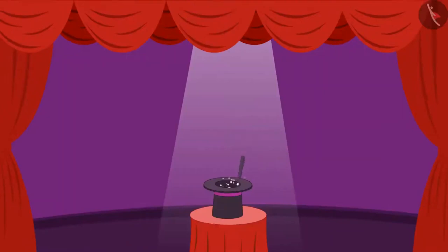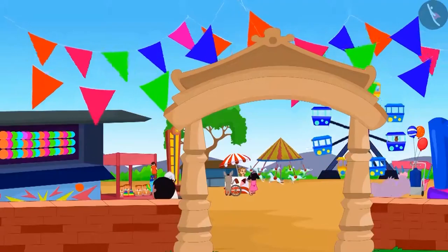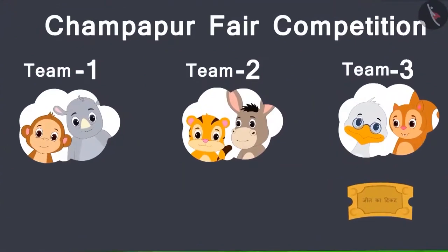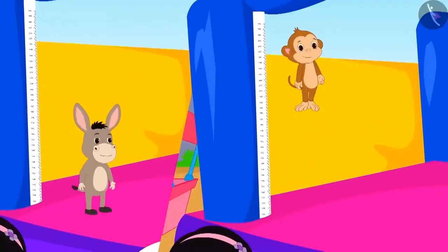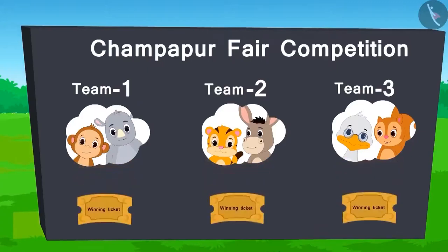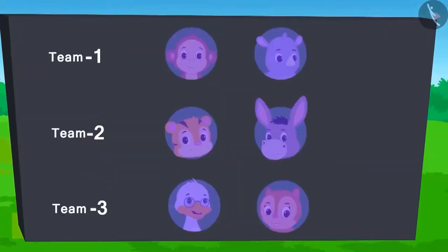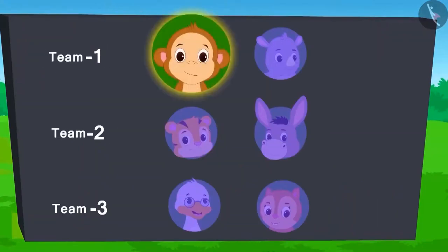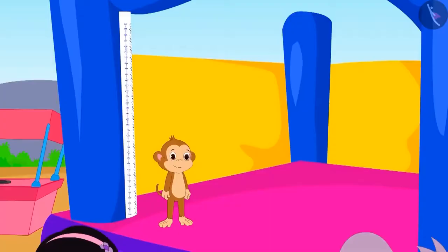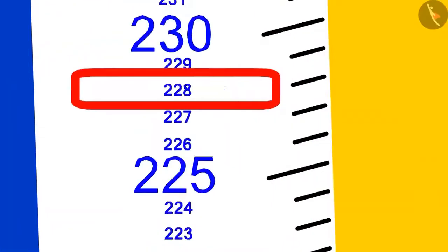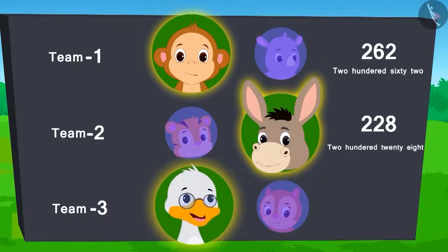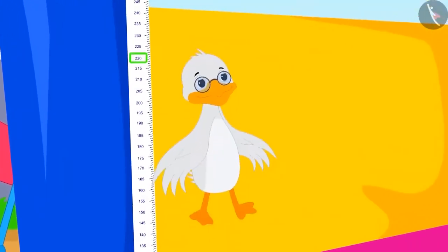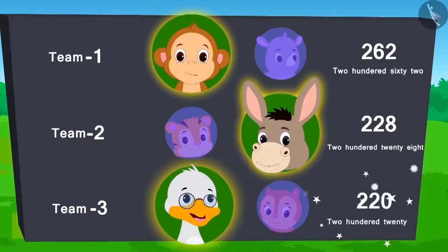Let's see what's going on at the fair. The next competition is high jump. The team which makes the highest jump will win the ticket. Baban from team 1 and Bhola from team 2 have jumped and reached 262 and 228 respectively. Now it's the turn of Badak Uncle from team 3. Uncle jumped hard but with difficulty and was able to reach only 220.